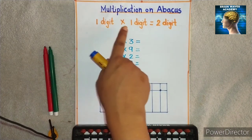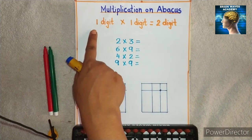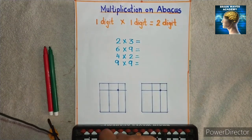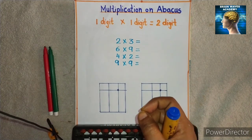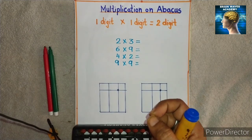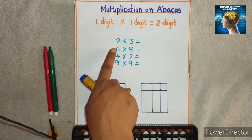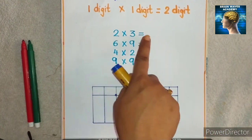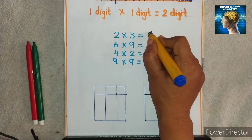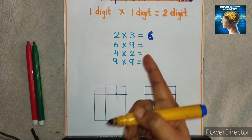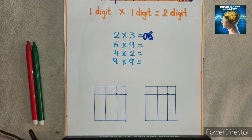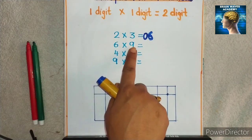Today's concept is one digit multiplied by one digit. When you multiply one digit by one digit on abacus, we need to express the answer as two digits. If the result is a single digit, we will add a zero in front — we prefix a zero. For example, 2 multiplied by 3: two threes are 6, which is a single digit, so we prefix a zero to make it 06.